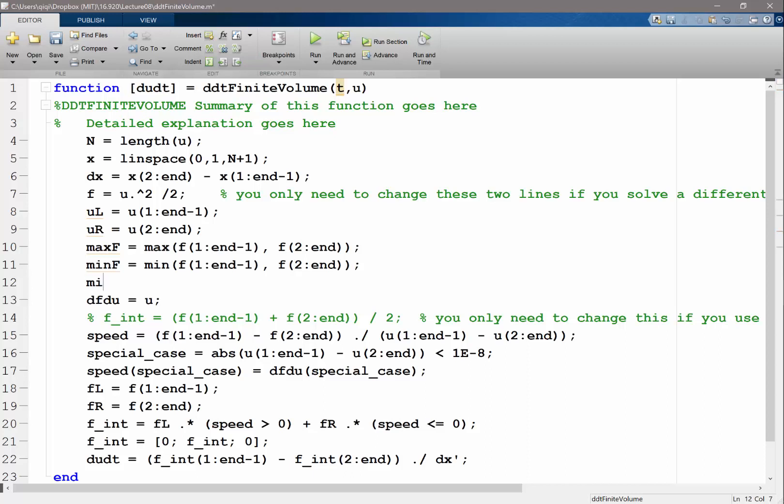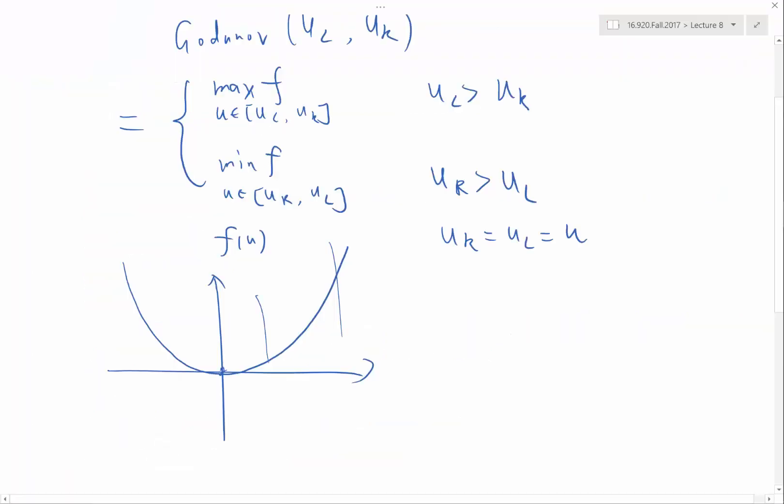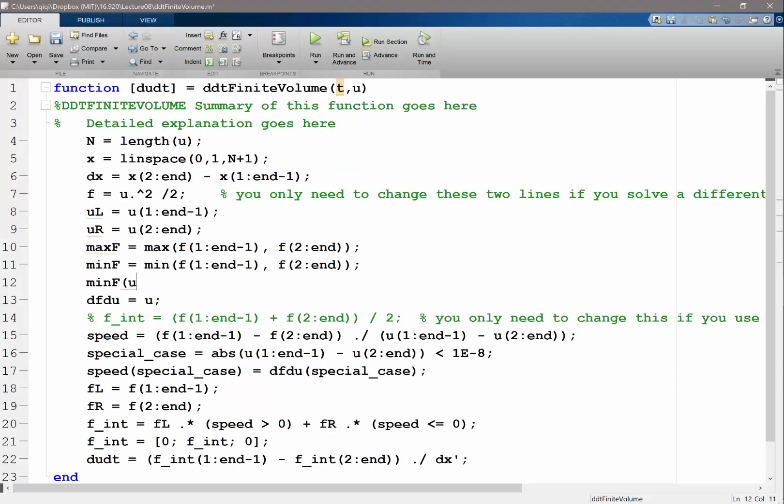I also have a minimum flux equal to the minimum of this. And then I want to replace the minimum flux when uR greater than 0 greater than uL. Can I do this trend comparison in MATLAB? No. uR greater than 0 and then an ampersand. Let me just multiply it. So I think it is equal to 0.